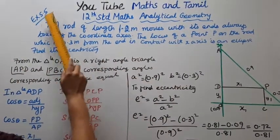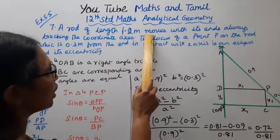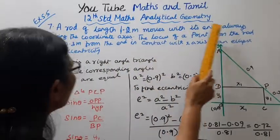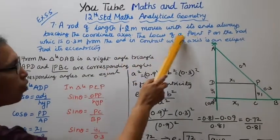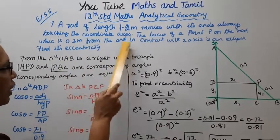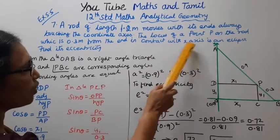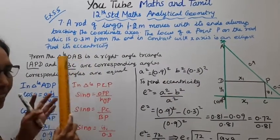12th Standard Maths Analytical Geometry Exercise 5.5-7. A rod of length 1.2 meters moves with its ends always touching the coordinate axes. The locus of a point P on the rod, which is 0.3 meters from the end in contact with x-axis. Find its eccentricity.